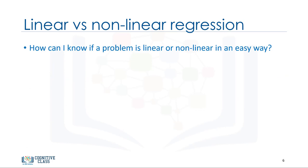Let me answer two important questions here. First, how can I know if a problem is linear or non-linear in an easy way? To answer this question, we have to do two things. The first is to visually figure out if the relation is linear or non-linear. It's best to plot bivariate plots of output variables with each input variable. Also, you can calculate the correlation coefficient between independent and dependent variables, and if for all variables it is 0.7 or higher, there is a linear tendency, and thus it's not appropriate to fit a non-linear regression. The second thing we have to do is to use non-linear regression instead of linear regression, when we cannot accurately model the relationship with linear parameters.